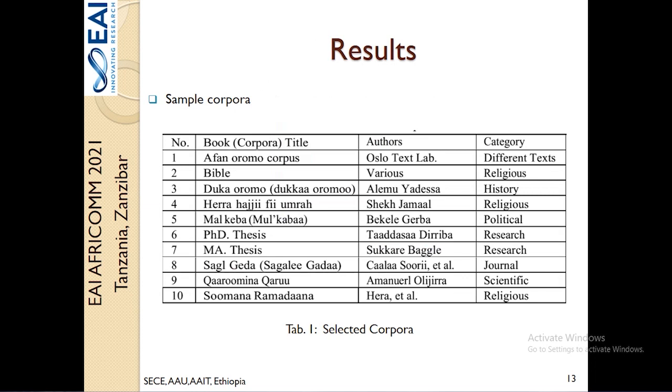In terms of the literatures, we collected 10 literatures which span a range of topics from religious to politics to scientific topics. We also have a very large corpora extracted from the Oslo text laboratory, which consists of a range of texts written in Afan Oromo.